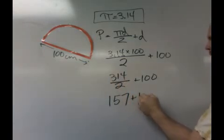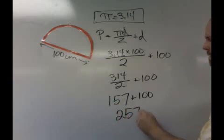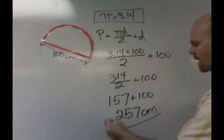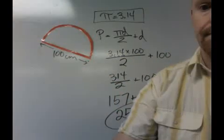And then we're going to add in 100, and we get 257 centimeters as our perimeter for this semicircle. Thank you so much.